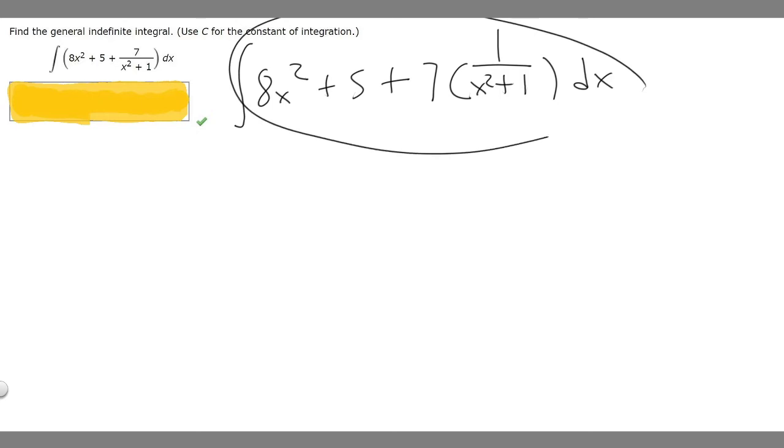We've got to take the antiderivative of this function. Let's start on the left side with 8x squared. We add 1 to our exponent, so it becomes x cubed, then we divide by that. We have an 8 out front, and we've got to multiply by 8. So it becomes 8 over 3 times x cubed.